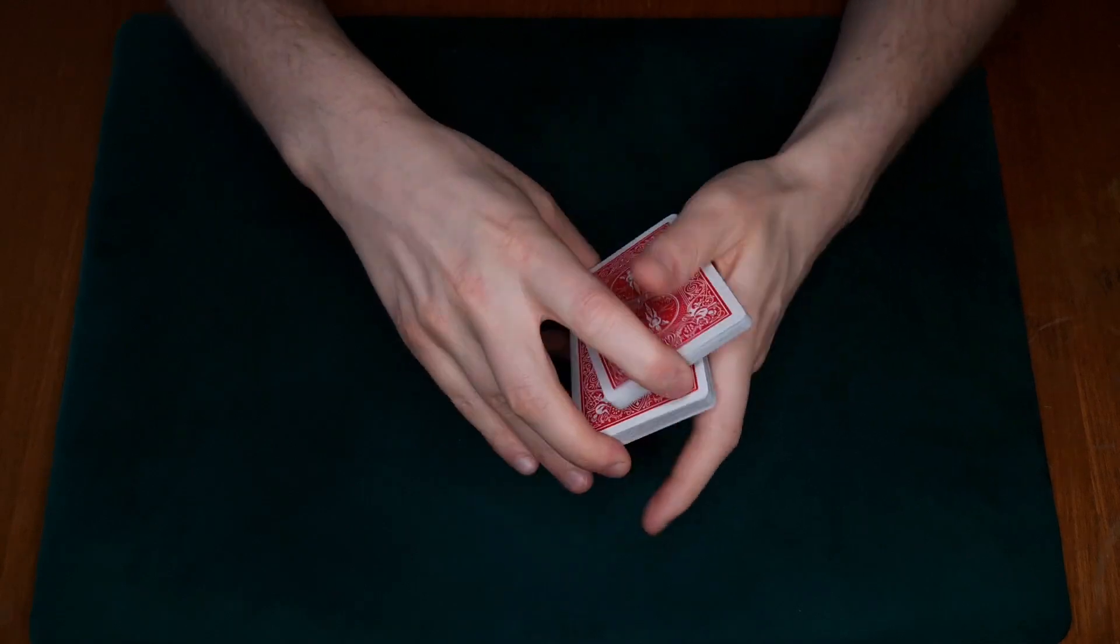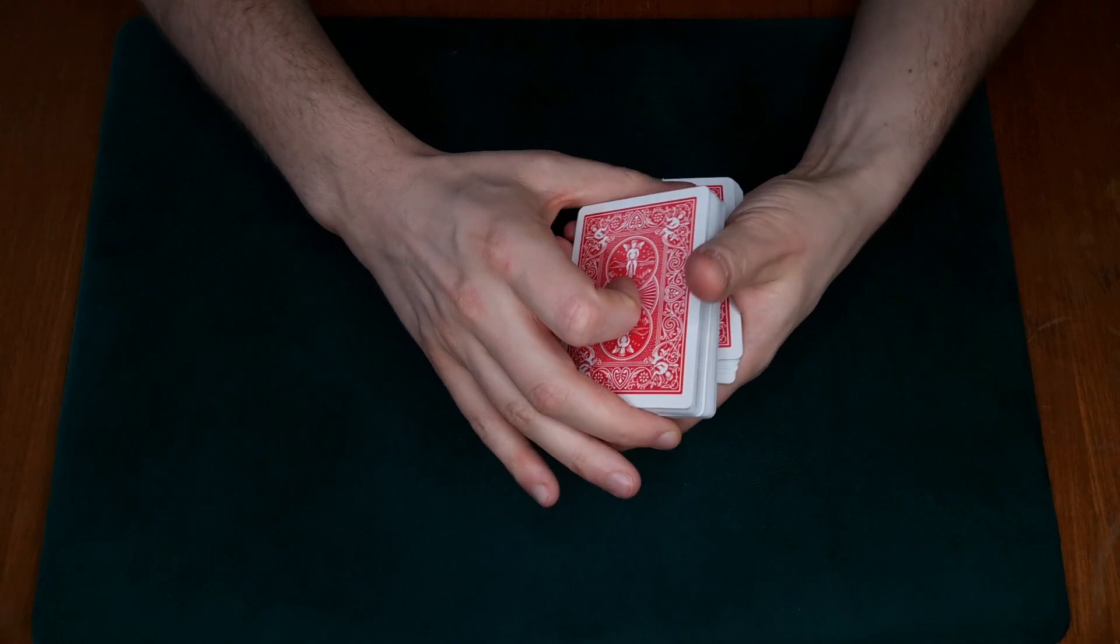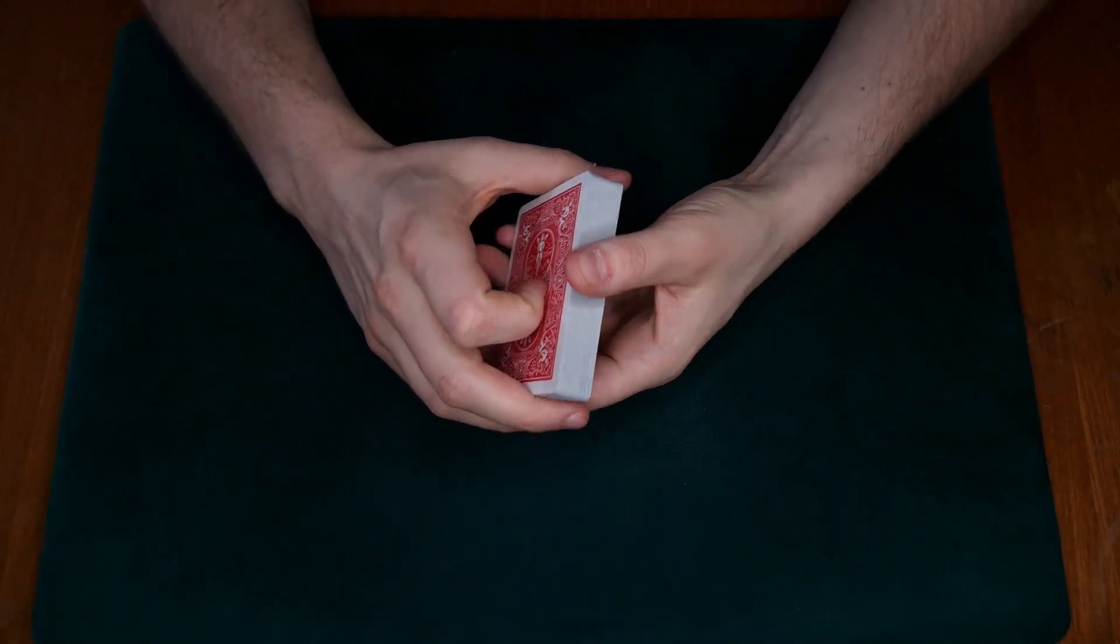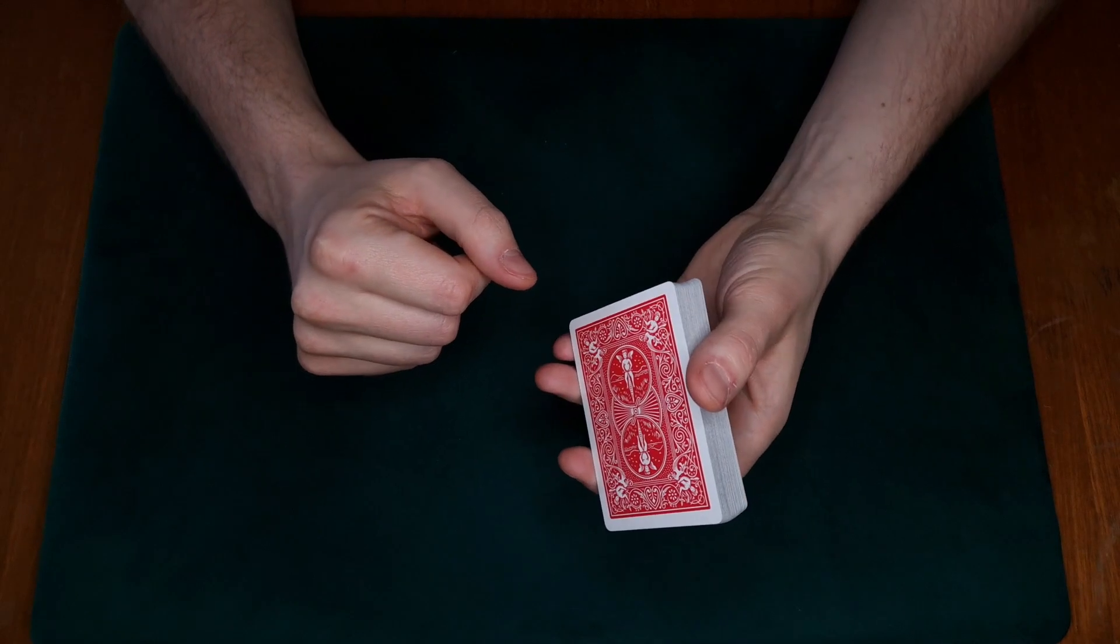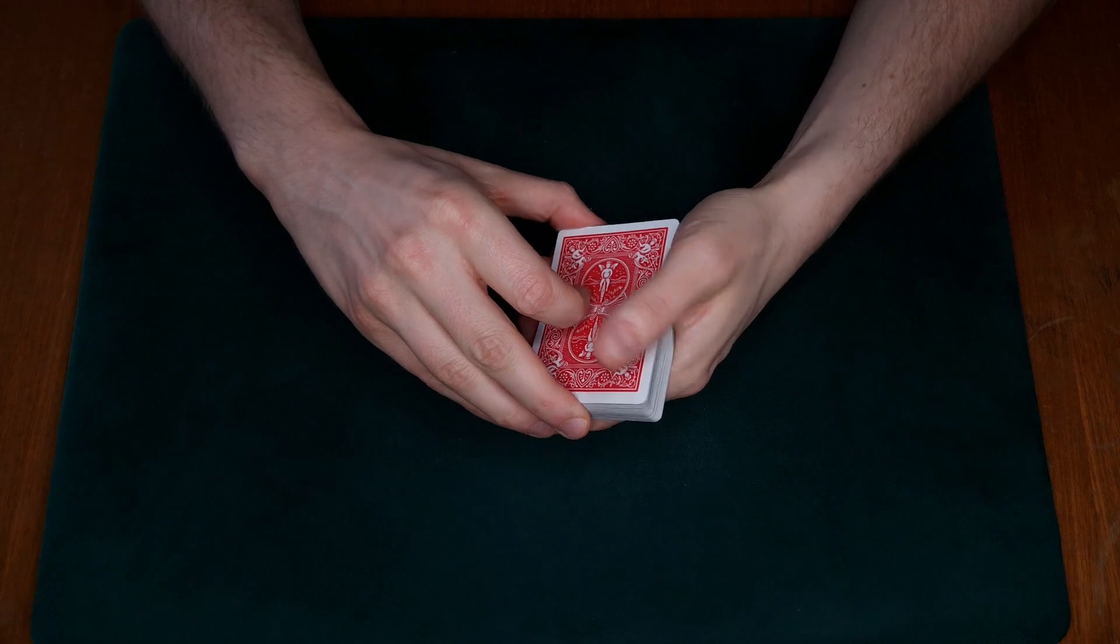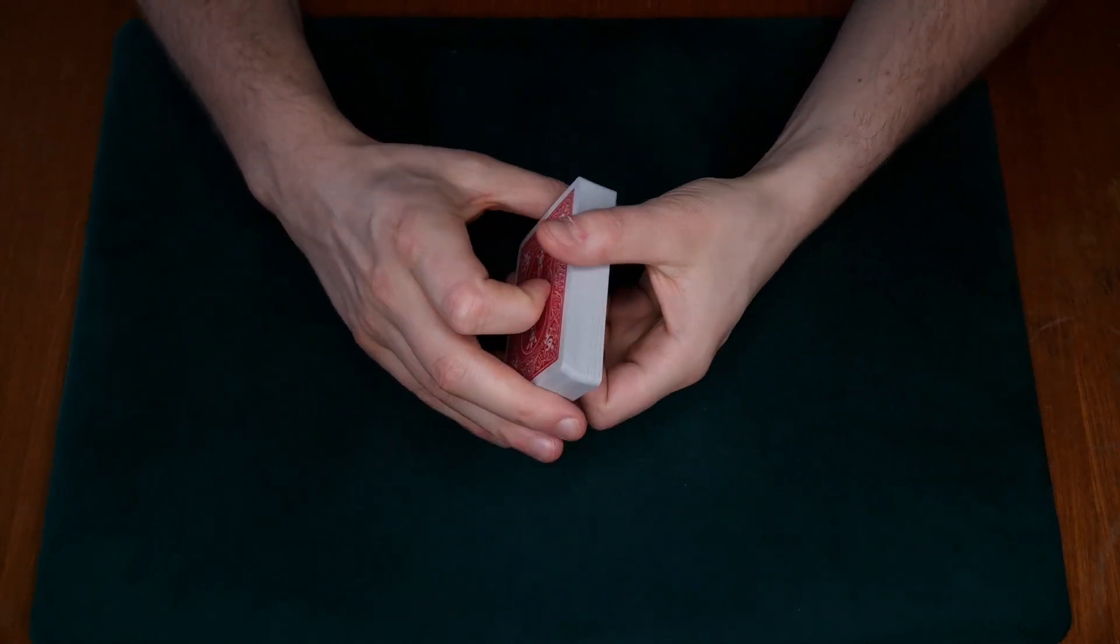And now we come to the fours. We're going to force that top four. Again in the book they use the back slip force. I'm not a fan of that, so instead I like to simply slip cut this into the middle or a little bit further down in the middle.